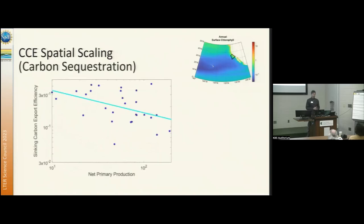Here's another example of spatial scaling. In this case, we're looking at sinking carbon exports, those sinking particles that transport carbon out of the surface ocean and into the deep ocean. And comparing that to net primary productivity on the y-axis here, I've got export efficiency. So that's the proportion of the primary productivity that gets exported. So we find in our region is that there's an inverse correlation. When there's high net primary productivity, a low proportion of that primary productivity gets exported.